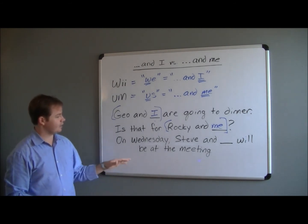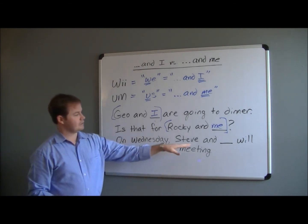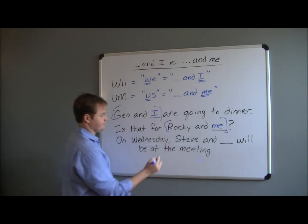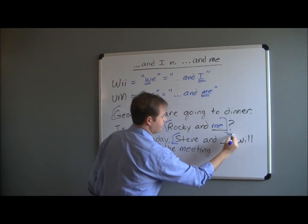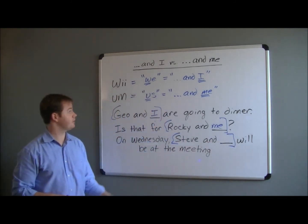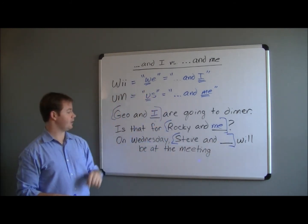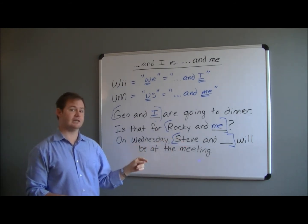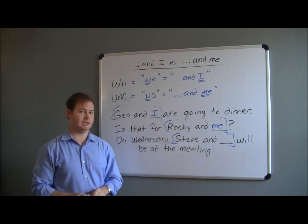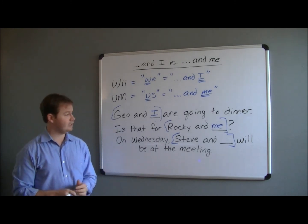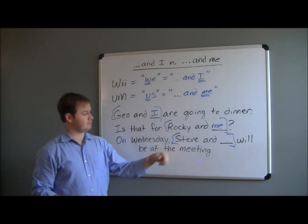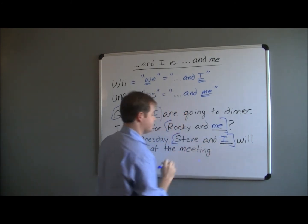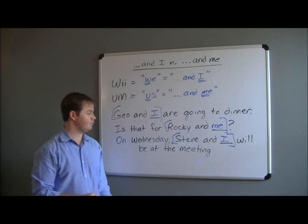And lastly, our final example: 'On Wednesday, Steve and blank will be at the meeting.' If we replace that portion with 'we' or 'us' — 'on Wednesday we will be at the meeting' versus 'on Wednesday us will be at the meeting' — if you said 'we,' you are correct. That means it is going to be 'Steve and I.' On Wednesday, Steve and I will be at the meeting.